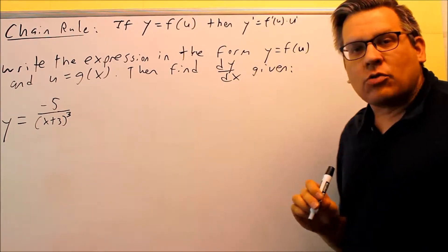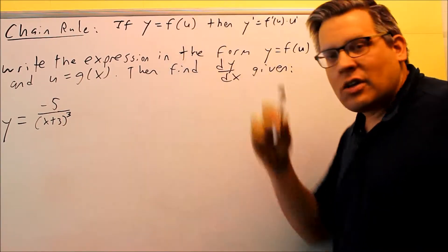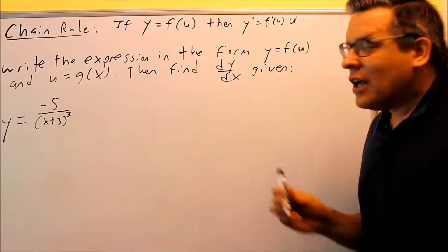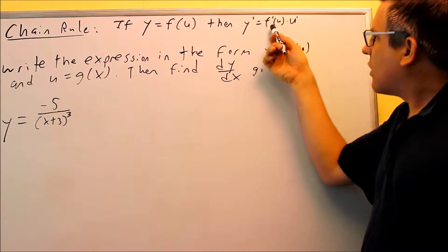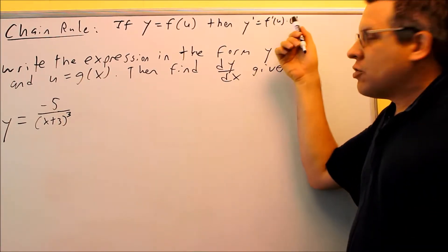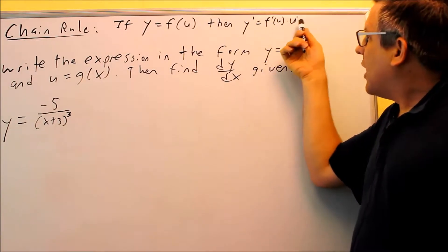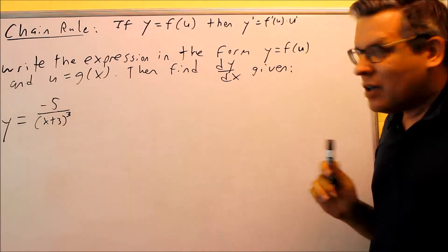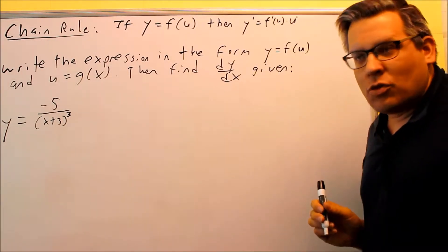The reason why it's called chain rule is because you might have several inside functions - you might have an outside, an inside, an inside function, and then what happens is you take the derivative of the outside one and then you keep going inward. So you take a derivative all the way inside and you may have more derivatives that are kind of chained on the end here, it's all multiplied - that's why it's called the chain rule.